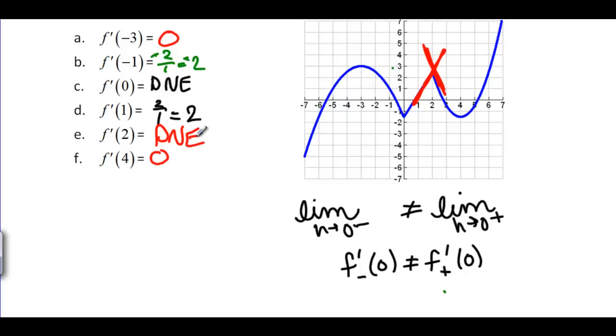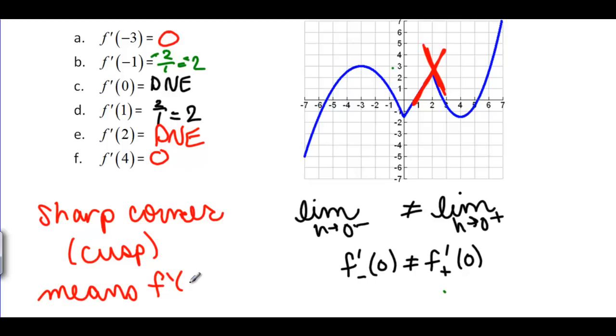So what we've learned here is a sharp corner called in math a cusp means that the derivative there does not exist.